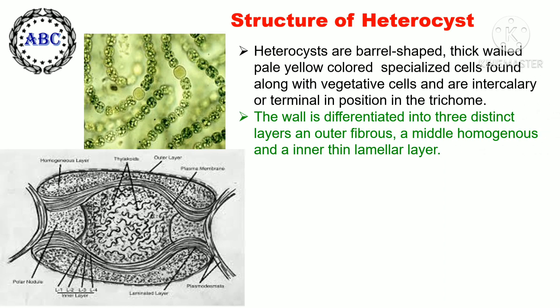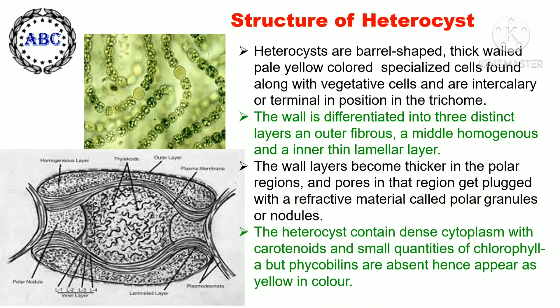The structure of heterocysts: heterocysts are barrel-shaped, thick-walled, pale yellow colored, specialized cells found along with vegetative cells, and are intercalary or terminal in position in the trichome. The wall is differentiated into three distinct layers: an outer fibrous, a middle homogeneous, and an inner thin lamellar layer. The wall layers become thicker in the polar region and the pores in that region get plugged with a refractive material called polar granules or nodules. The heterocyst contains dense cytoplasm with carotenoids and small quantities of chlorophyll a, but phycobilins are absent, hence they appear yellow in color.